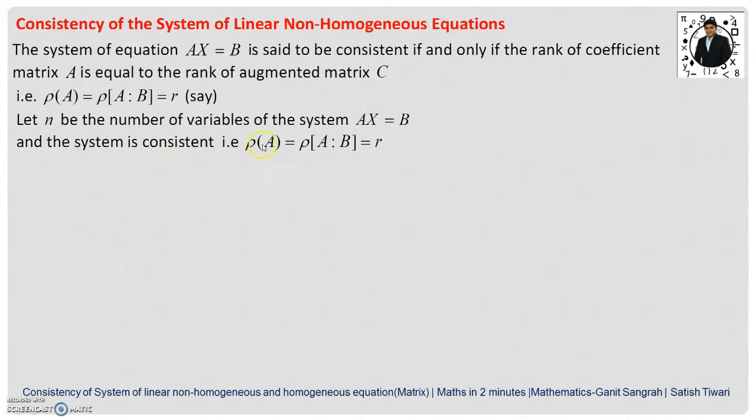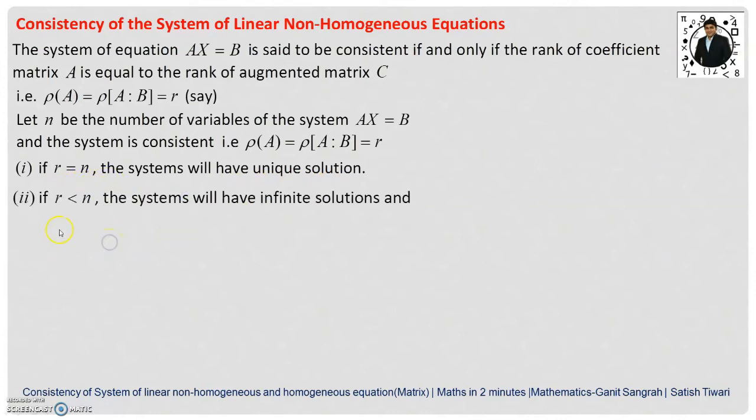Let n be the number of variables of the system Ax equals B, and the system is consistent, that is rank of A equals rank of [A:B] equals R. Then if R equals n, the system will have unique solution, that is rank equals the number of unknowns. If R is less than n, that is rank is less than the number of unknowns, the system will have infinite solutions.